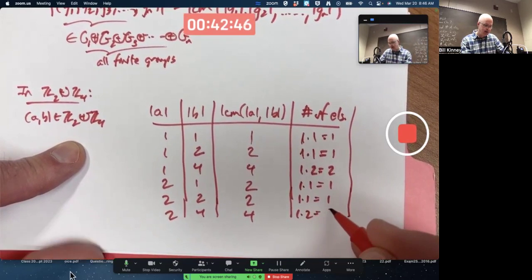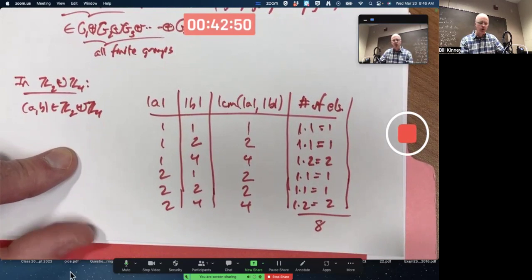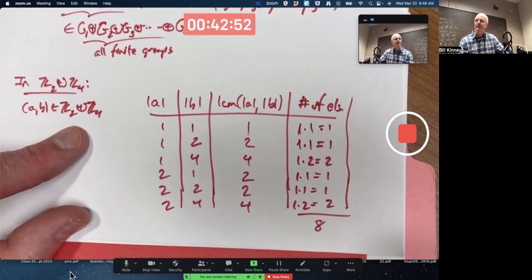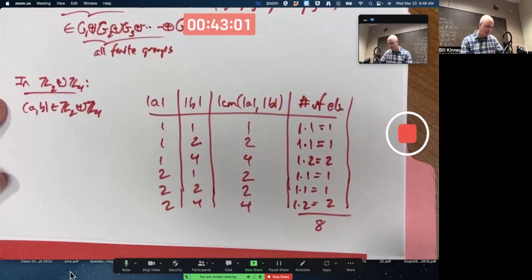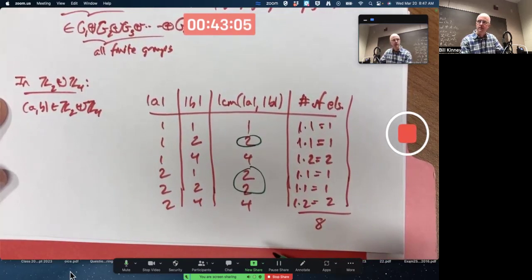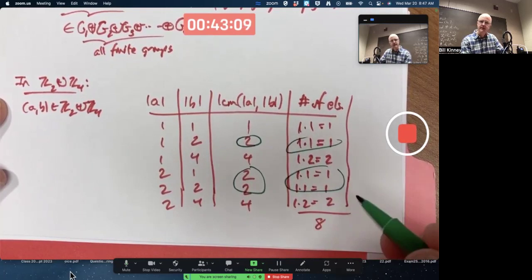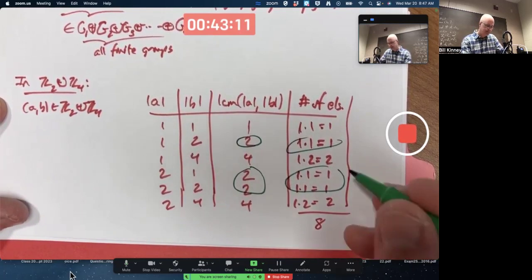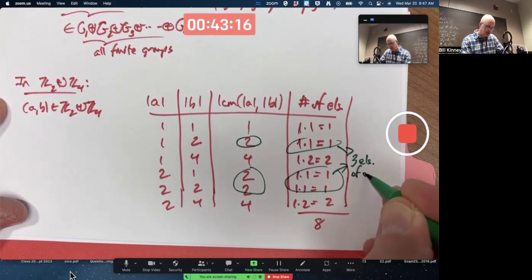The total of the numbers in this column, 8, has to match the order of the group. How many elements, based on this analysis, have order 2 in here? They come from those three rows. Corresponding number of elements is 1 plus 1 plus 1 is 3. Three elements of order 2.